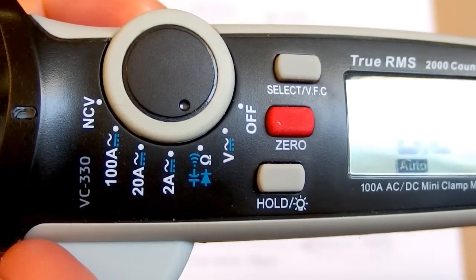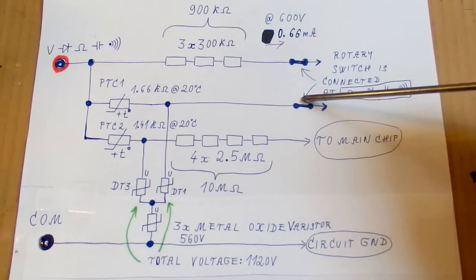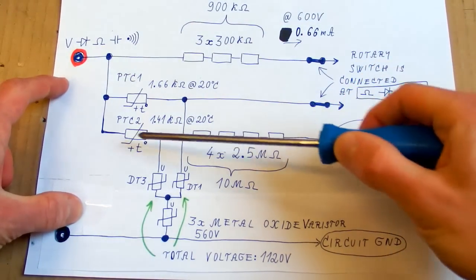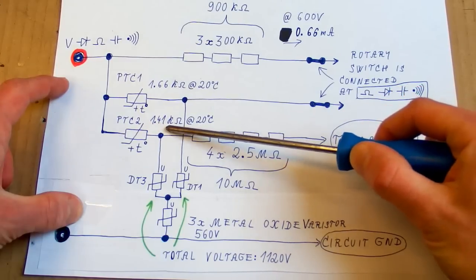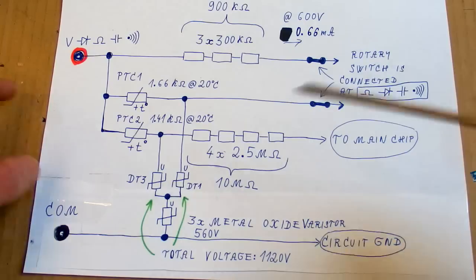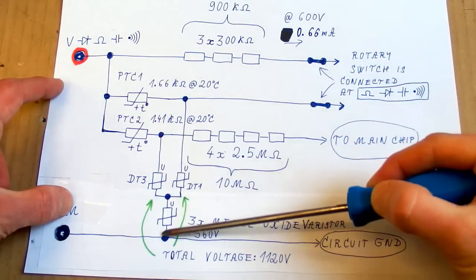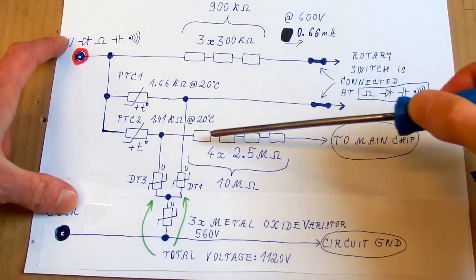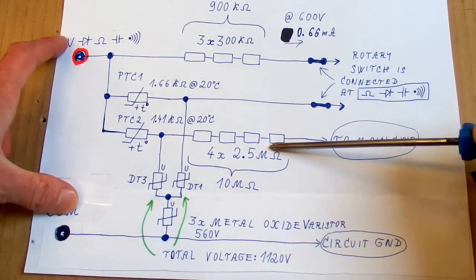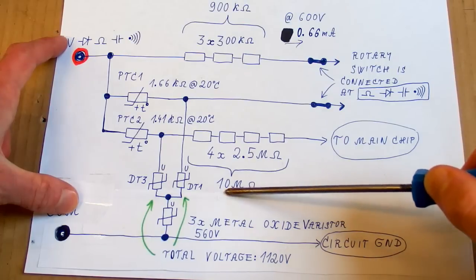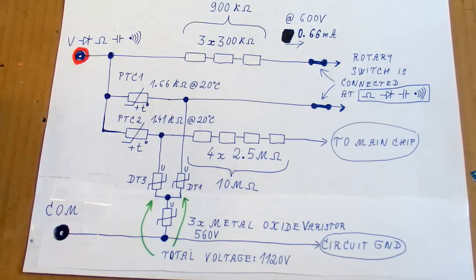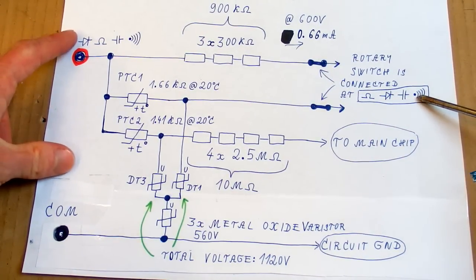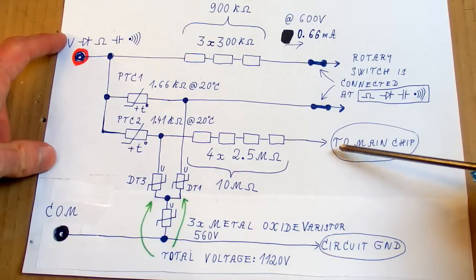And the last rail also goes via a PTC thermistor, which has about 1.4 kilo ohms at room temperature. And it's also protected by two metal oxide varistors in series. And there are also some very high resistance resistors, 4 times 2.5 mega ohms. So in total it is 10 mega ohms. And this goes into the main chip. So it seems like it's using those two for resistors, diodes, capacitors and conductivity test. And this one for voltage.